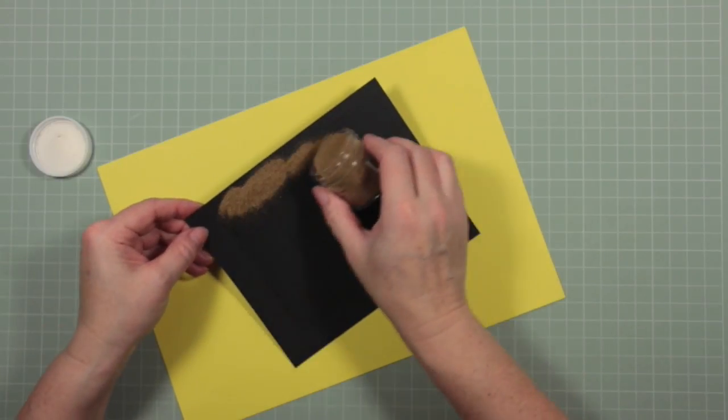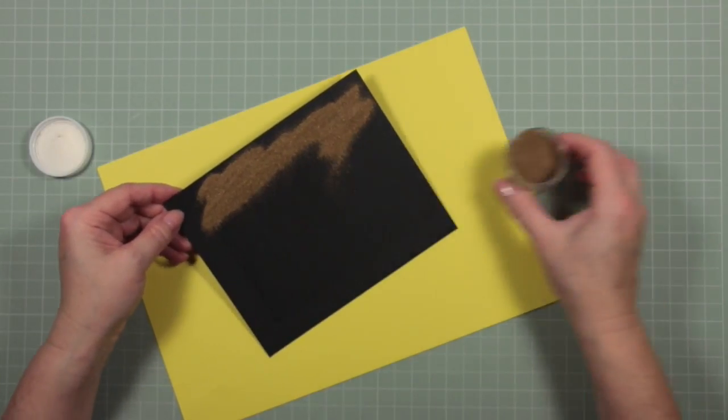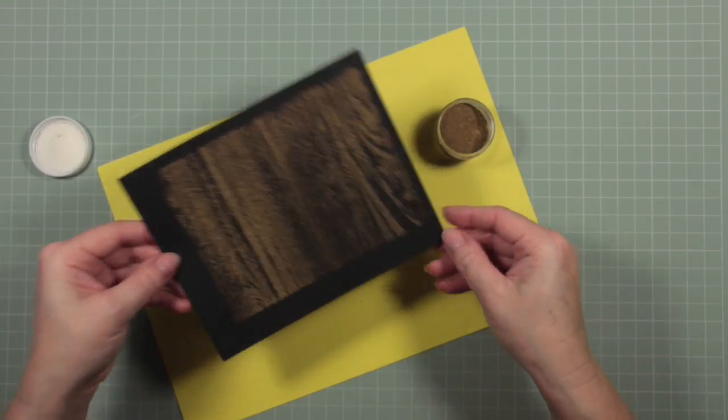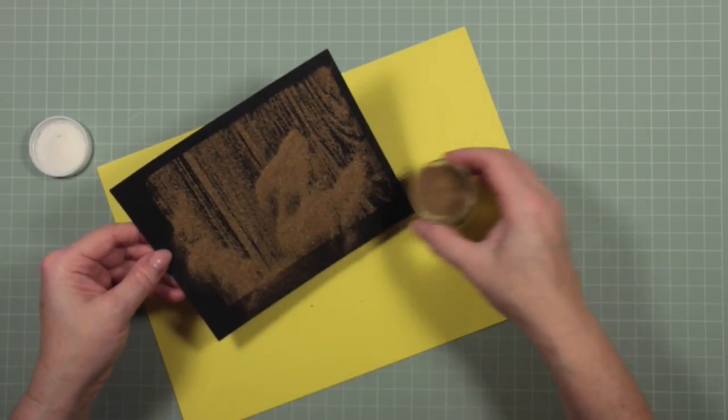I'm using an Altenew rose gold embossing powder and I will provide links to that and all the other items I use in this video below. You can see the beautiful wood effect coming out as soon as I put that embossing powder on it.